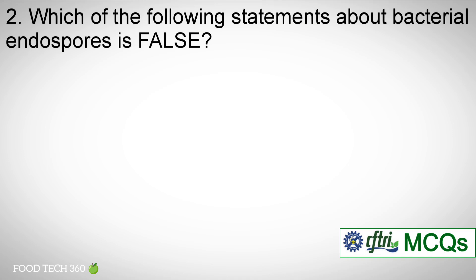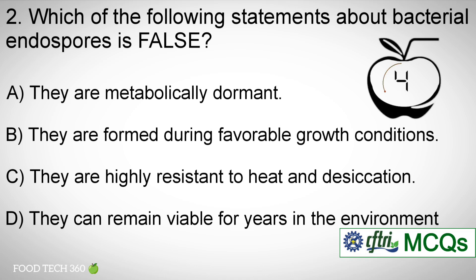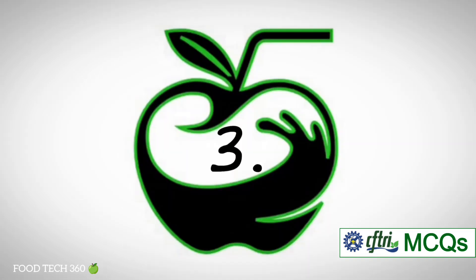Question number 2. Which of the following statements about bacterial endospores is false? Options: A. They are metabolically dormant, B. They are formed during favorable growth conditions, C. They are highly resistant to heat and desiccation, D. They can remain viable for years in the environment. Correct answer: B. They are formed during favorable growth conditions.